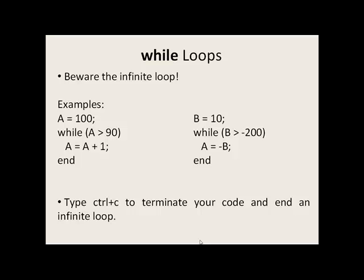When dealing with while loops, you must be careful about creating infinite loops. Here's an example: a is equal to 100. 100 is greater than 90, that's true, so we add 1 to a. Back to the top: 101 is greater than 90, true, add 1. Then 102, 103, 104, 105 — a will always be greater than 90. This loop will keep going on and on forever.